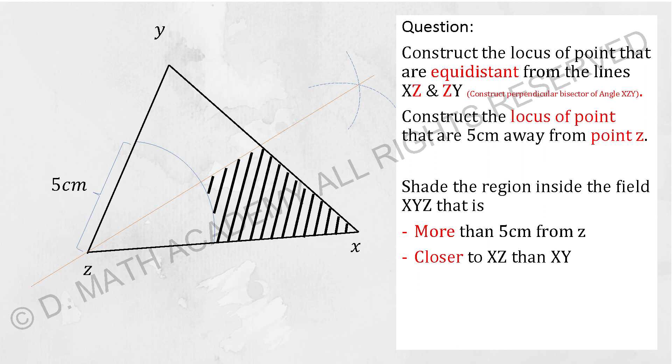So the question over at the next part will be construct the locus of points that are equidistant from the line XZ and ZY. The first thing that you need to do is to identify the angle they're referring to, which is angle XZY over there.